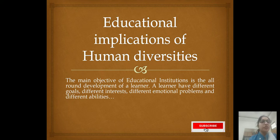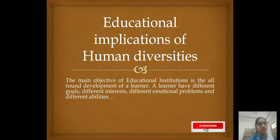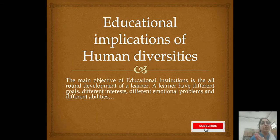Look, every educational institution — school, college, institution — has a main objective: to develop a child's all-round development. When each child is focused on all-round development, individual differences need to be kept in mind. A learner has different goals, different interests, different emotional problems, and different abilities. So a teacher must recognize the individual differences and individual needs of the student and then provide solutions accordingly. This is the main educational implication of human diversity.